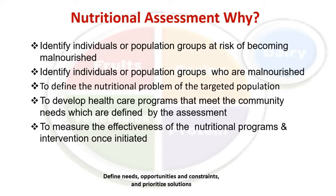The second point is to identify individuals or population groups who are already malnourished. So the two points are: who are at risk of becoming malnourished, and who are already malnourished. The third point is to define the nutritional problem of the targeted population — once we identify that a group is malnourished or at risk, we determine what type of malnourishment is present in that specific group.